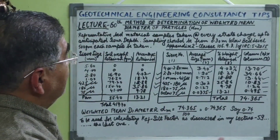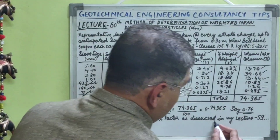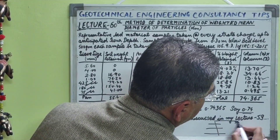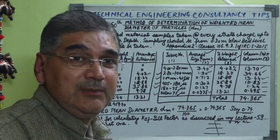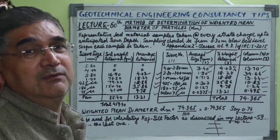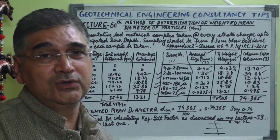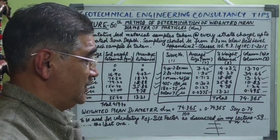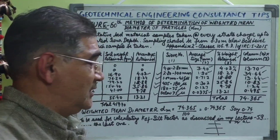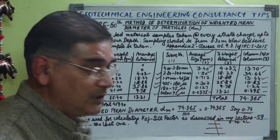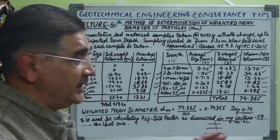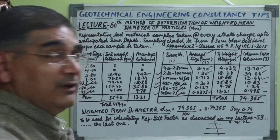The weighted mean diameter dm is calculated as 74.365 divided by 100, giving 0.74365, approximately 0.74 mm. This is how we calculate the weighted mean diameter at every sampling level. This is the minimum prerequisite for a geotechnical engineer conducting soil investigation for any bridge — these values must be incorporated into the geotechnical investigation report to help the bridge designer and structural designer decide on the foundation depth and the level at which the well foundation needs to be rested.